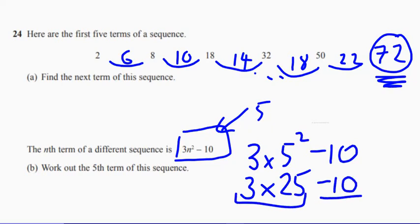So, 75 take away 10, and that's going to give us a grand old total of 65. We can see just there, 65.